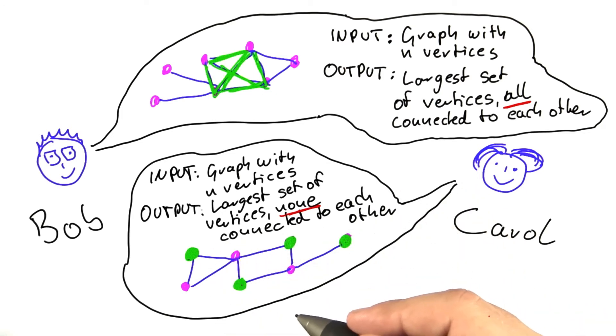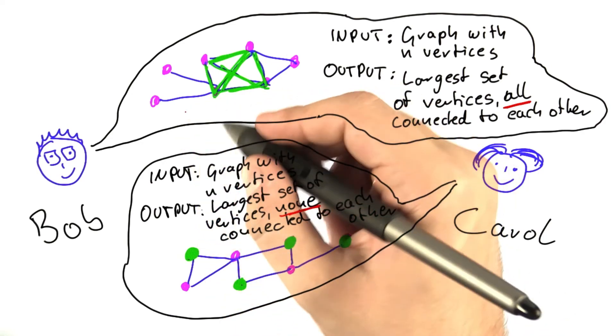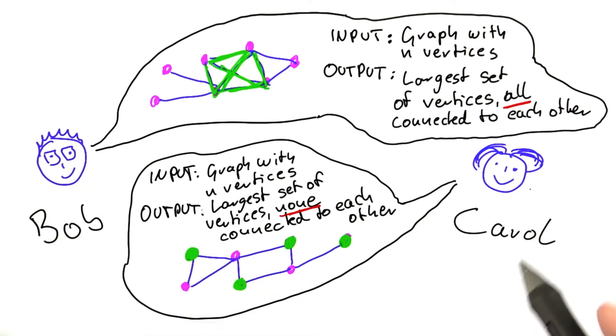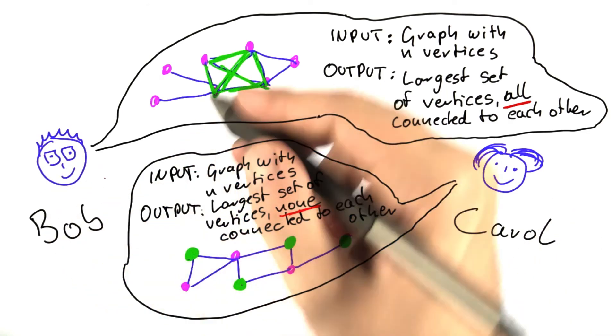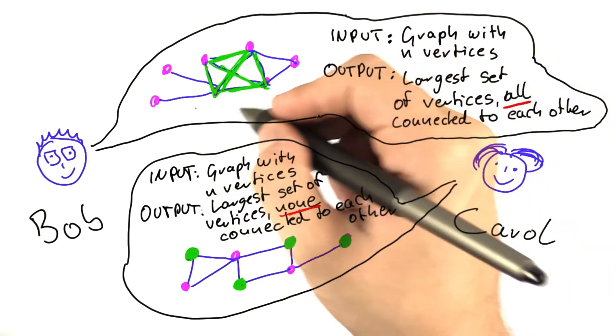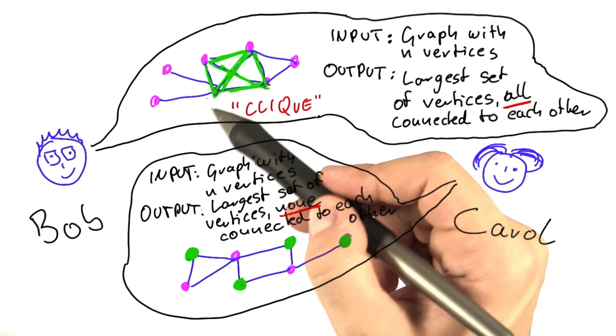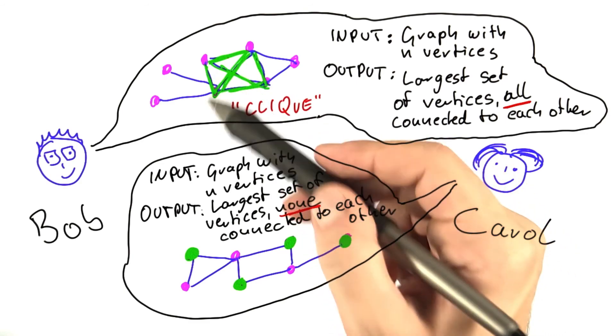So in the future, to be better able to talk about these problems, we'll also give them names, as we do with most problems, so that we don't always have to say this is Bob's problem and this is Carol's problem. What we will call Bob's problem is a problem named clique, because all of those vertices are very closely connected to each other, just like in a clique of friends, for example.